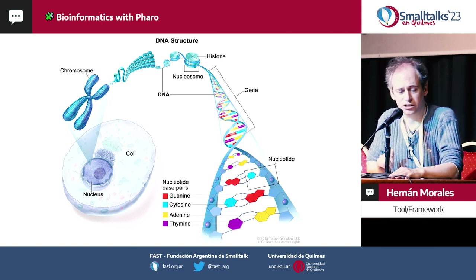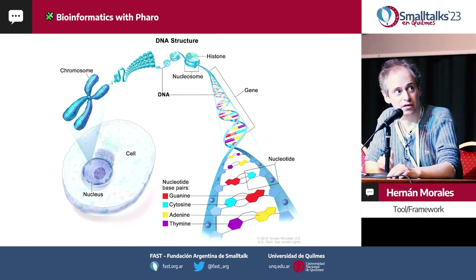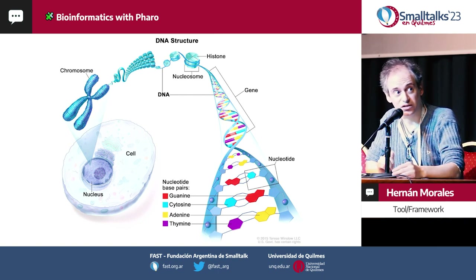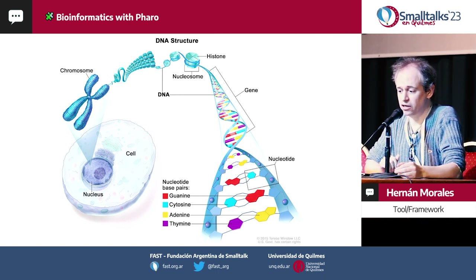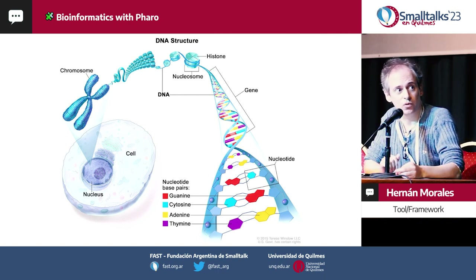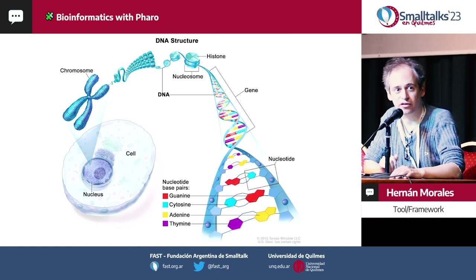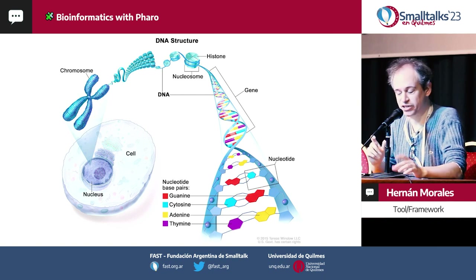DNA is like a chain shaped in a spiral way with two strands. They contain the four molecules — A, C, G, T — as you may know. They are paired in a complementary way: A always pairs with T, and cytosine always pairs with G (guanine).